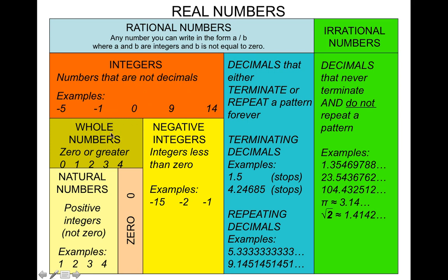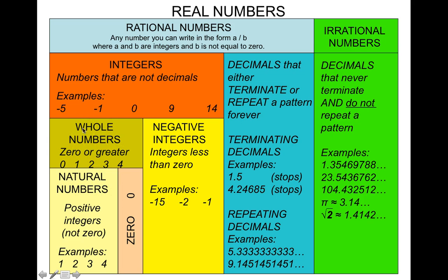Let's look at different types of whole numbers. There are two types: natural numbers and 0. The natural numbers are positive integers, but 0 is not included — that's the difference between whole numbers and natural numbers. Natural numbers start with 1, then 2, 3, 4, and so on. So 0 and the natural numbers together make up the whole numbers.